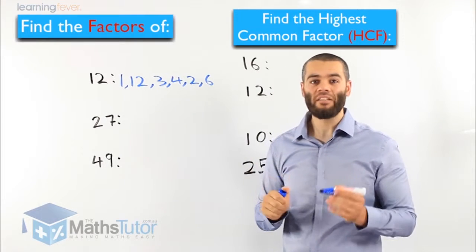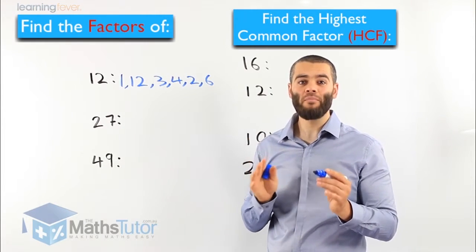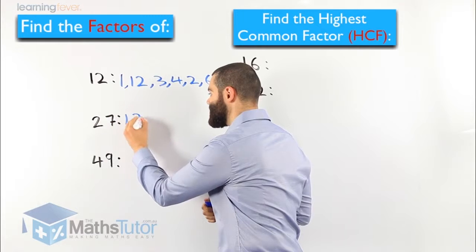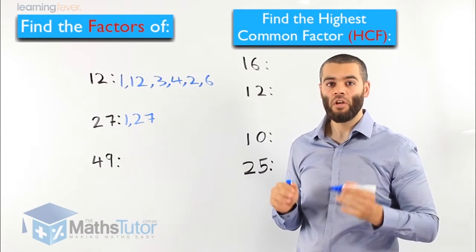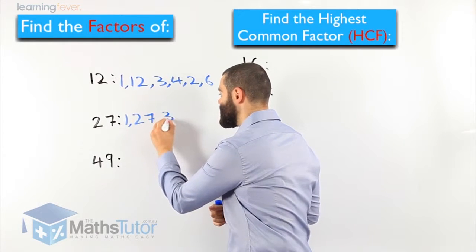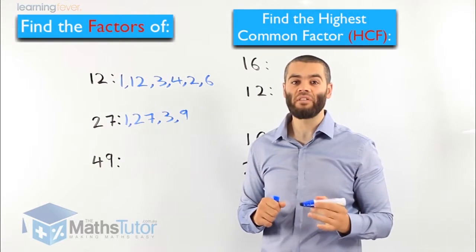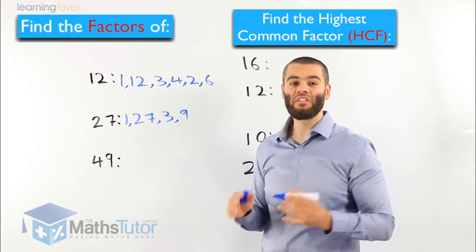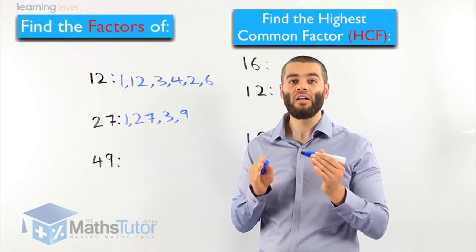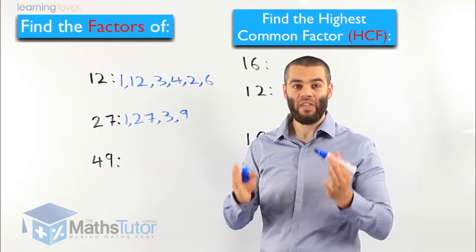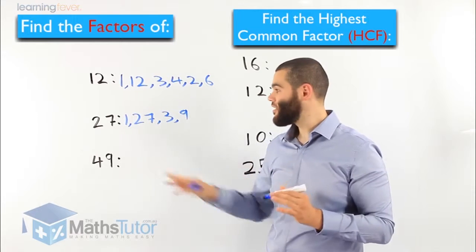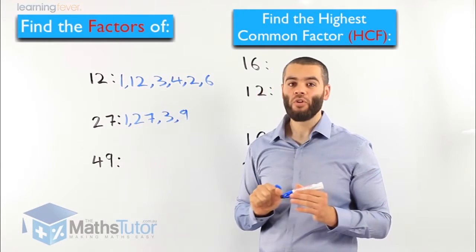Let's look at 27. What are the factors of 27 — meaning, what are the numbers that multiply to get 27? We know 1 times 27 is 27. We also know that 27 comes in our 3 times tables, which means 3 times 9 is also 27. So 1 times 27 and 3 times 9 give us 27. That means 1, 27, 3, and 9 — we have 4 factors of 27.